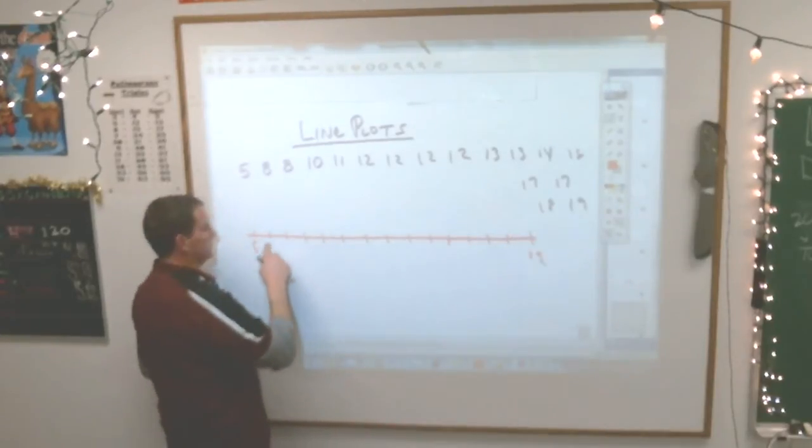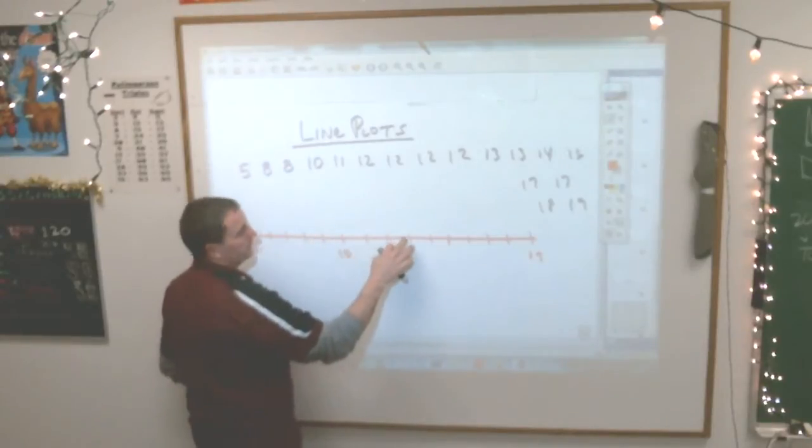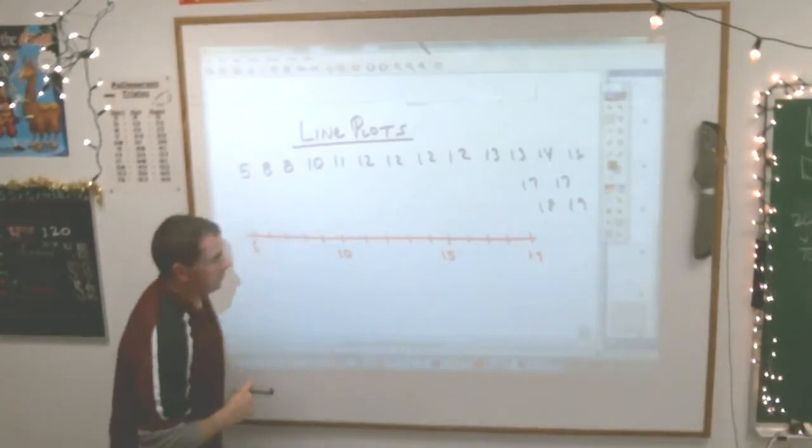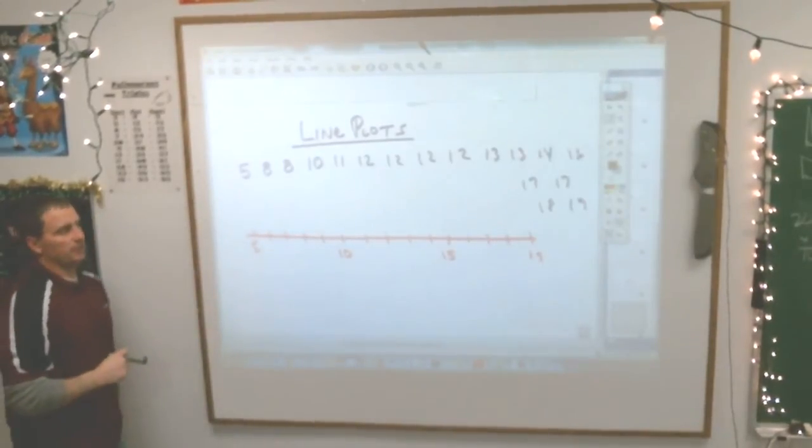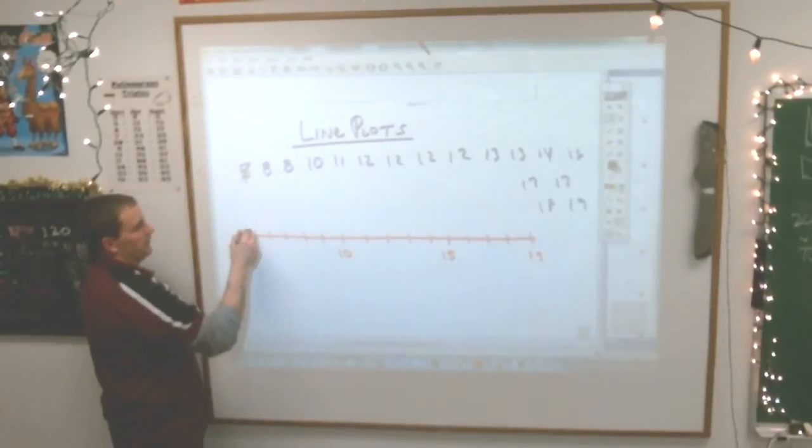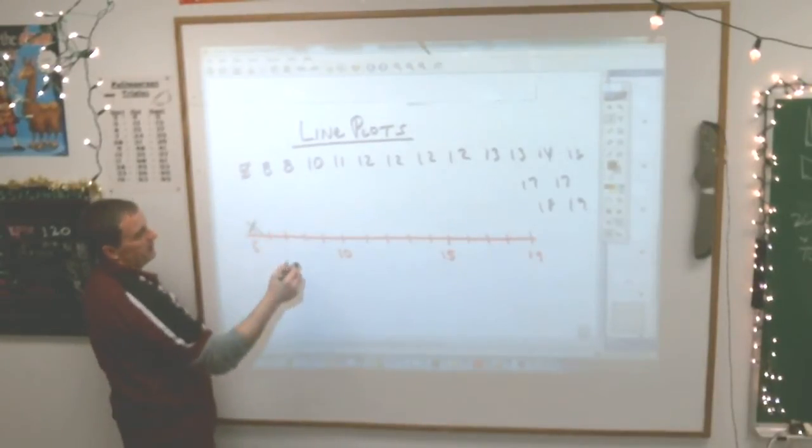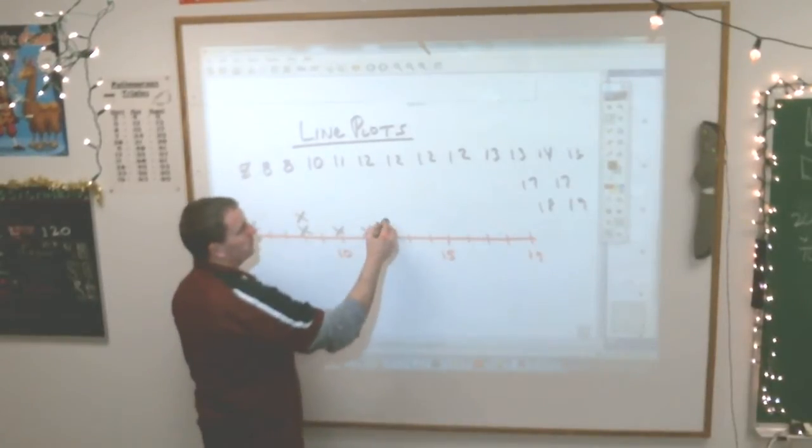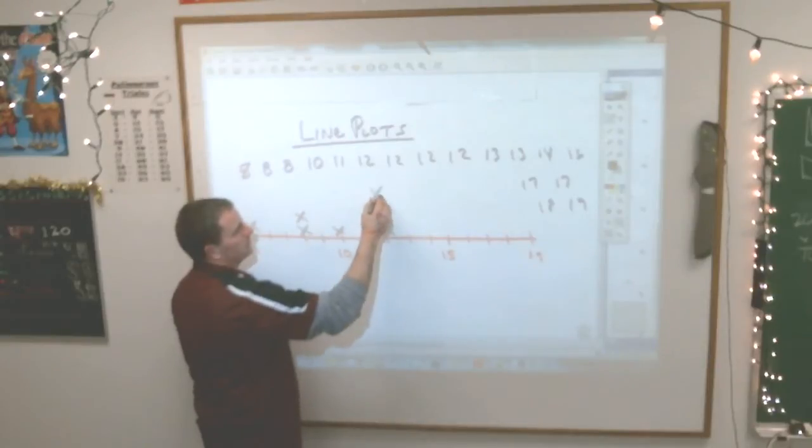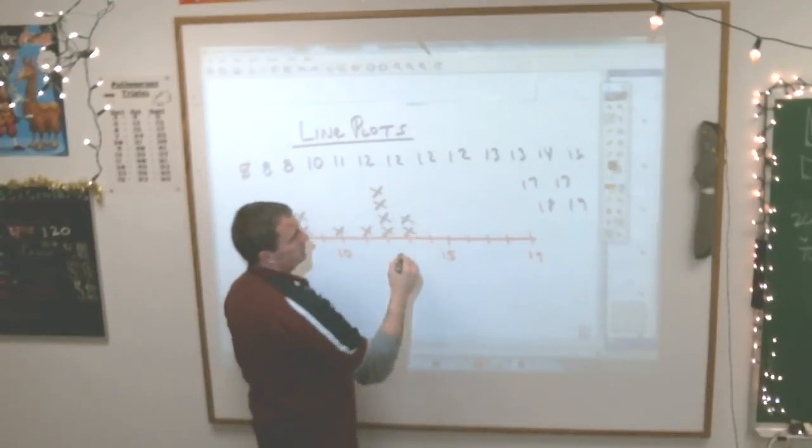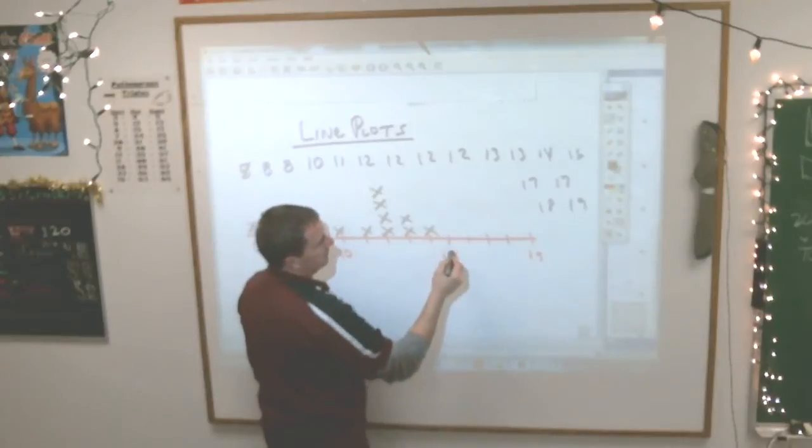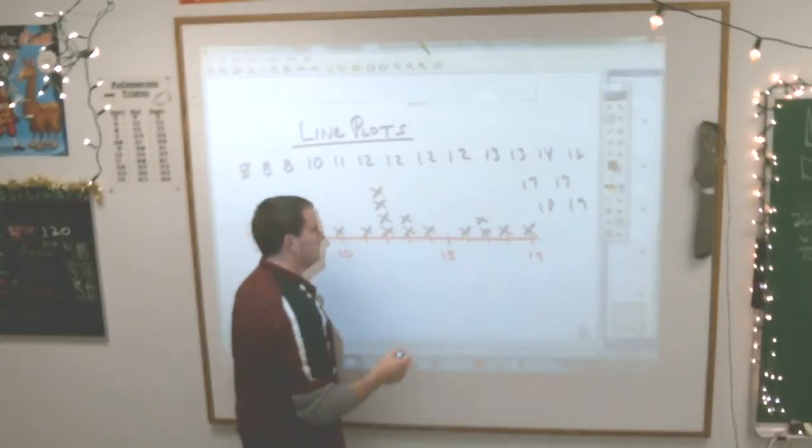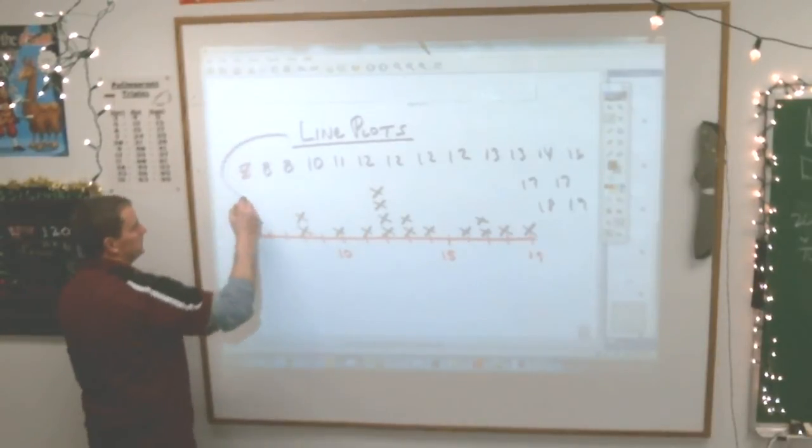And then what do I do? Above each number, I put an X that stands for that number. So here's a 5, so I put an X there. An 8. 2 8's, so I put 2 X's there. 1, 10, 1, 11, 4 12's, 2 13's, 1 14, 1 16, 2 17's, and 18, 19, 19. And that is my line plot.